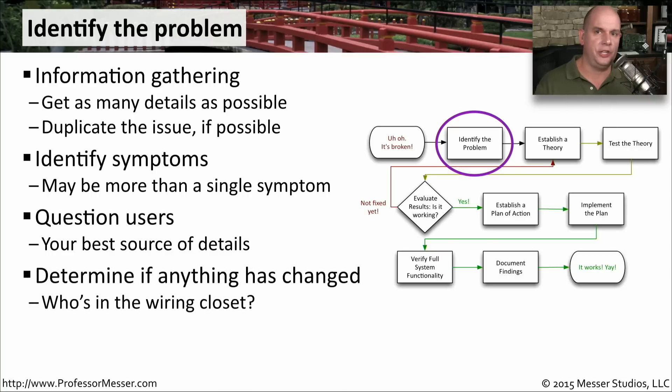You need to find out if anything changed. If you have a formal change control process, it may be very easy to go back to your documentation and see the last date and time and the details of that change. Or you may want to find out if anybody might be in the wiring closet right now moving cables around.